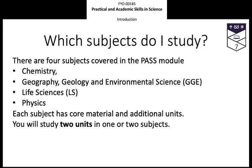The PASS module covers four key subjects: Geography, Geology and Environmental Science (GGE), Chemistry, Life Sciences, and Physics. It doesn't matter what your degree pathway or title is — it might be Forensic Science or Astrophysics and Maths — but these are the four key sciences you fall under. You will study one of these, and it's very easy to know which ones you'll be studying because you just look at your timetable. If you're studying foundations of chemistry, GGE, life sciences or physics, then you'll study PASS in those same subjects.